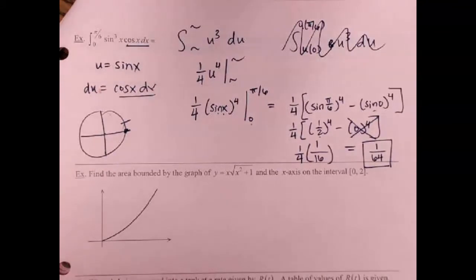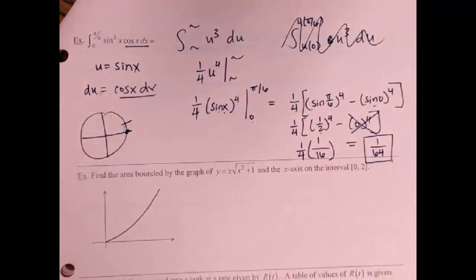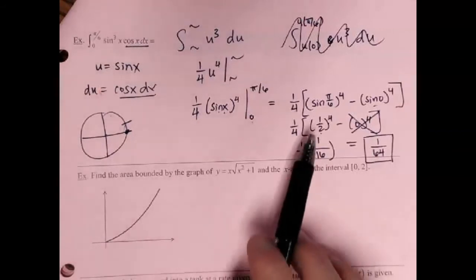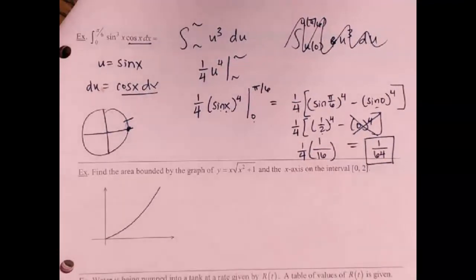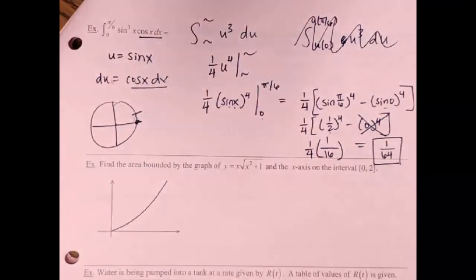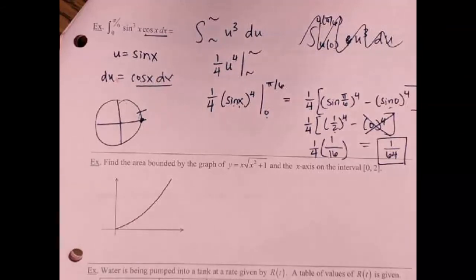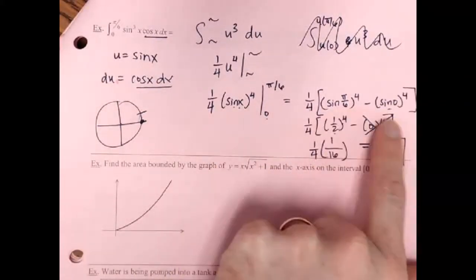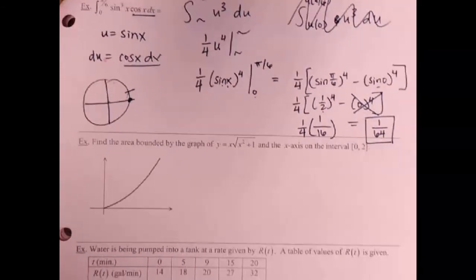To summarize: for u-sub with definite integrals, find the u limits and plug them in for u — in which case you don't need to reverse substitute — or if you're going to reverse substitute, use squiggles or placeholders. The upper squiggle here would have been 1/2, the lower would have been 0. Either way, it's your personal preference — just do the work consistently.